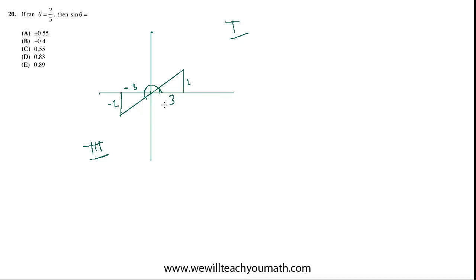In either case, the reference angle is the same because this reference angle here and this reference angle here are exactly the same. So in terms of finding the sine, we can just use SOHCAHTOA. We can say sine equals opposite over hypotenuse. So for this triangle, if theta is here, then sine theta equals opposite, which is 2, over hypotenuse.